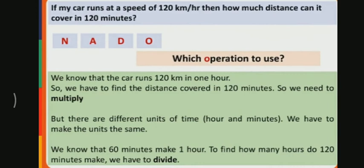O - which operation to use? We know that the car runs 120 km in 1 hour. So, we have to find the distance covered in 120 minutes. We need to multiply.